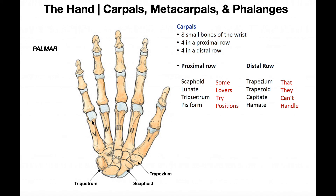Now, if we go to the metacarpophalangeal joints — it doesn't matter which one, it's for all of the digits — the joint between the metacarpal and the proximal phalanx, the metacarpophalangeal joint, is a condyloid joint. Condyloid joints are very similar to saddle joints. These joints allow motion in two planes: flexion and extension in the sagittal plane, abduction and adduction in the frontal plane, and circumduction is also allowed. Then any interphalangeal joint — whether it's the one at the thumb or the proximal or distal interphalangeal joints of digits two through five — these are all hinge joints, kind of like the elbow. These allow just motion in one plane, the sagittal plane: flexion and extension movements.